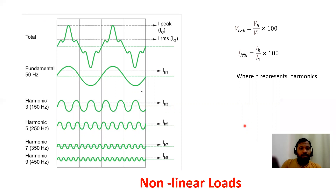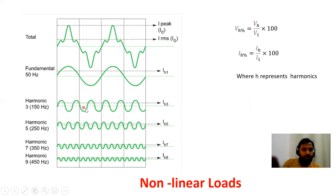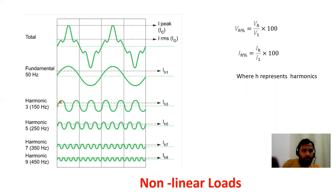Looking at the waveform representation: this is our fundamental frequency signal at 50 Hz. For the third harmonic, during one half cycle, the signal completes three cycles — one, two, three — that is why it is called the third harmonic. For the fifth harmonic, it completes five cycles during one half cycle — one, two, three, four, five. This is why they are called the third, fifth, and other harmonics.